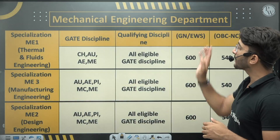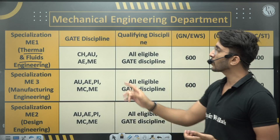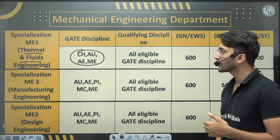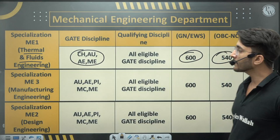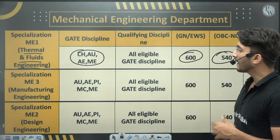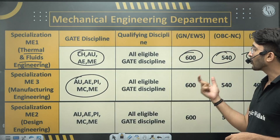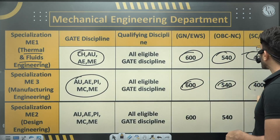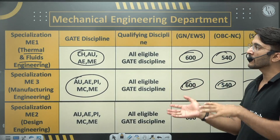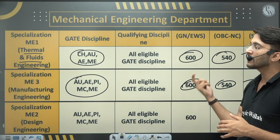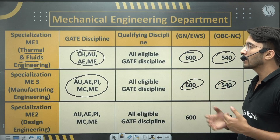In the Mechanical Engineering department, Thermal and Fluid Engineering M.Tech specialization is available. GATE disciplines CH, AU, AE, and ME are eligible. For Manufacturing Engineering, GATE papers AE, AU, PI, MC, or ME make you eligible. If your GATE score exceeds the mentioned cutoffs, you will receive a call; they then prepare a final shortlist and may invite you for a written test or interview.